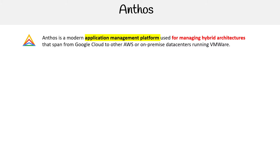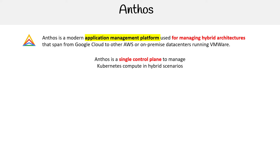Anthos is a modern application management platform used for managing hybrid architectures that span from Google Cloud to other AWS or on-premise data centers running VMware. Anthos is a single control plane to manage Kubernetes compute in hybrid scenarios.